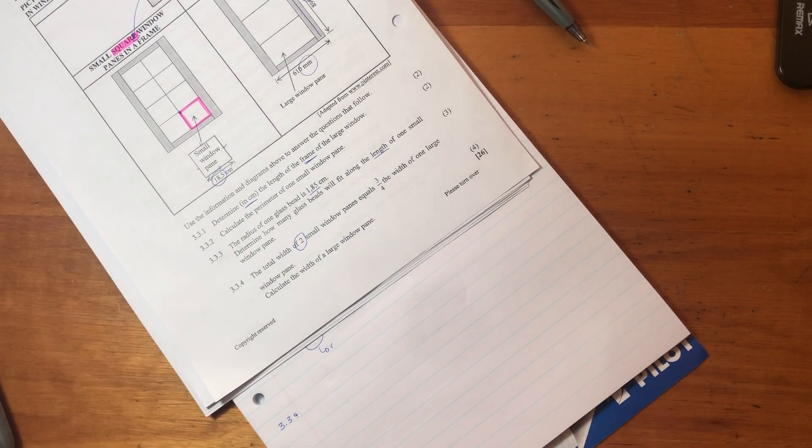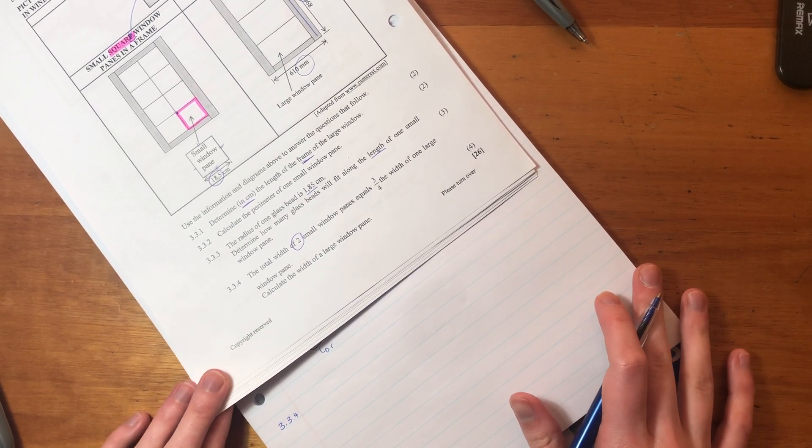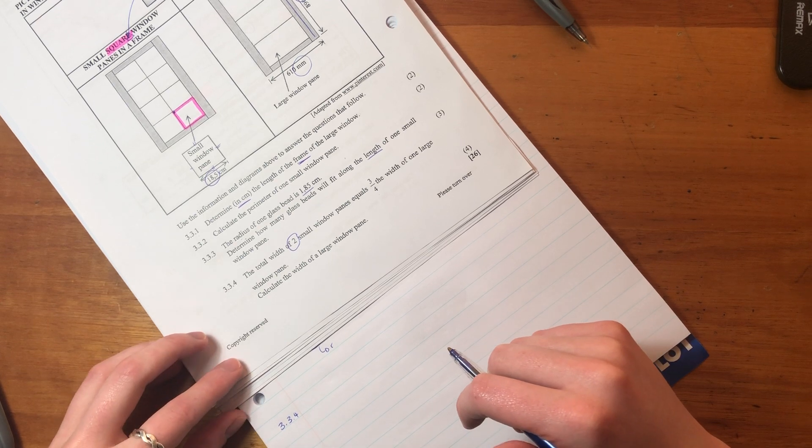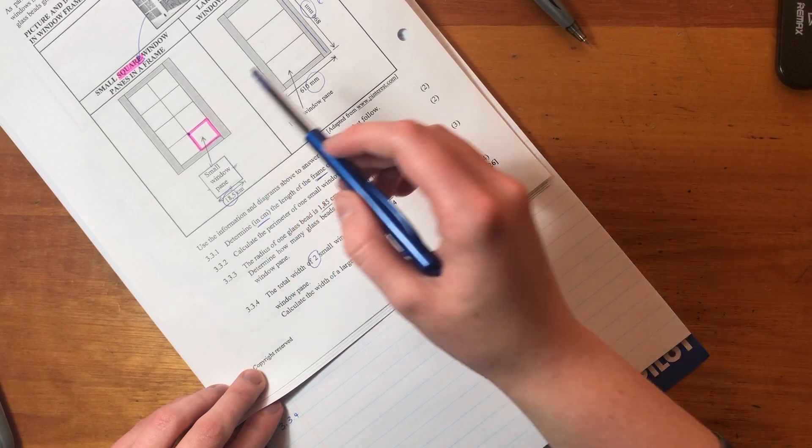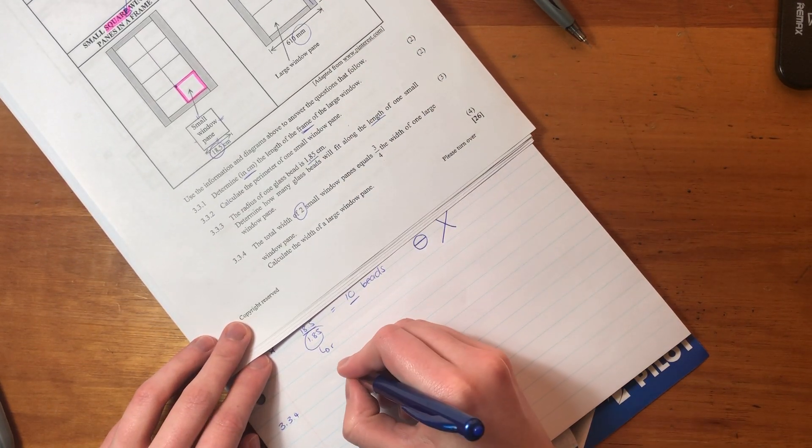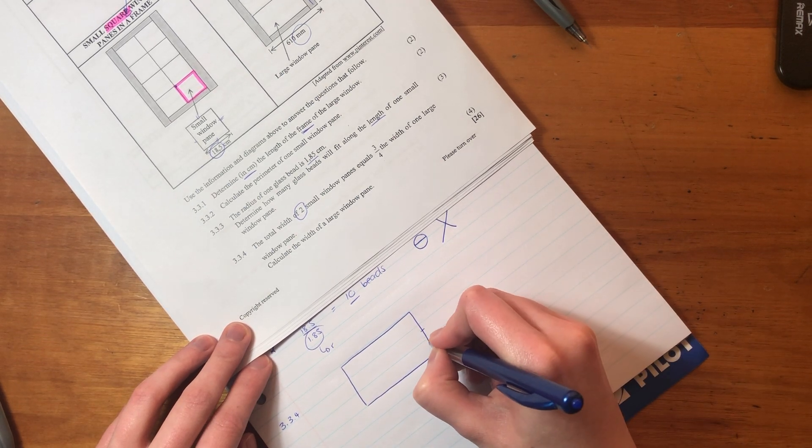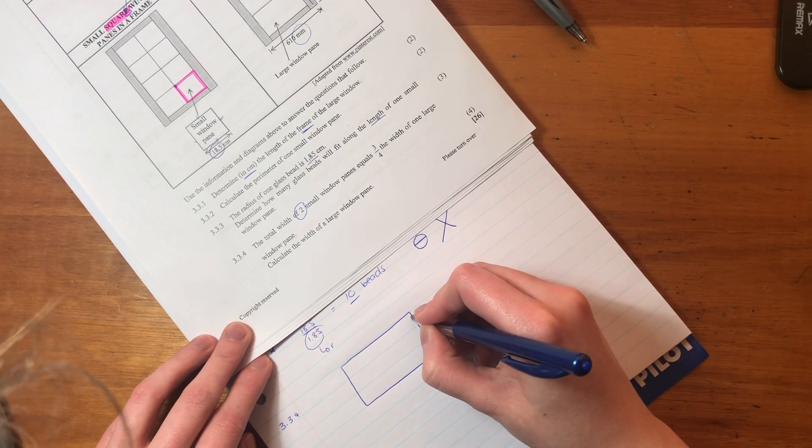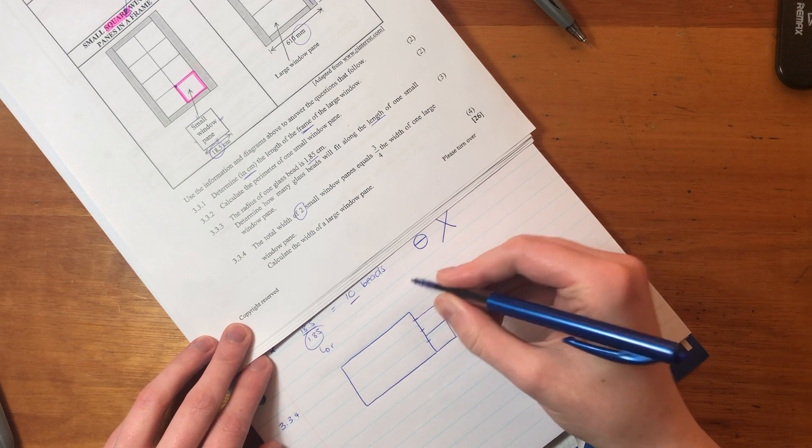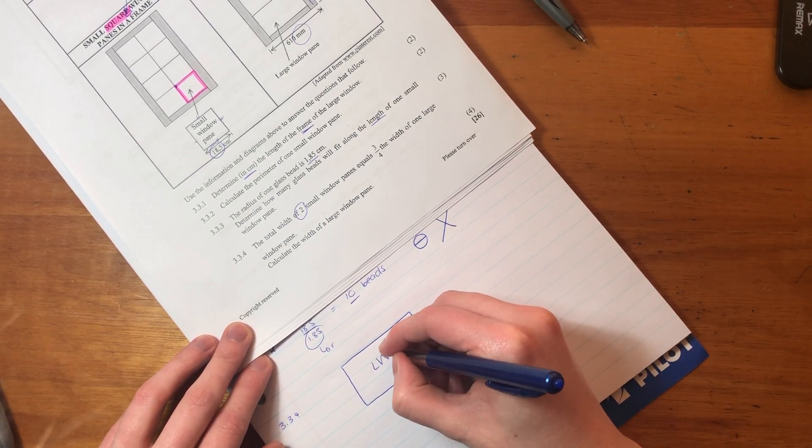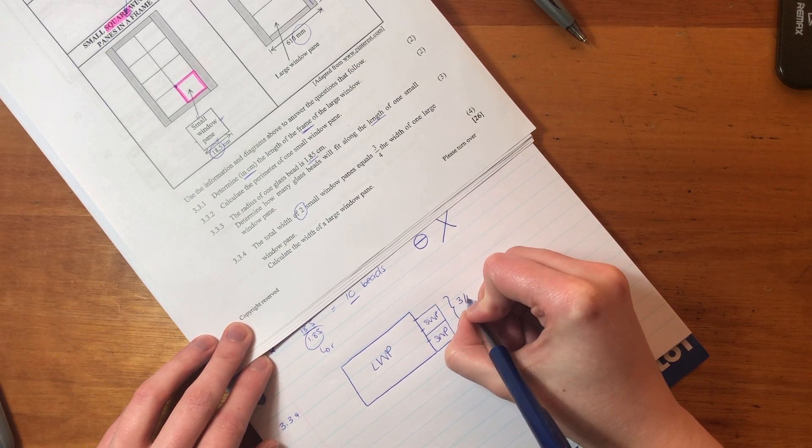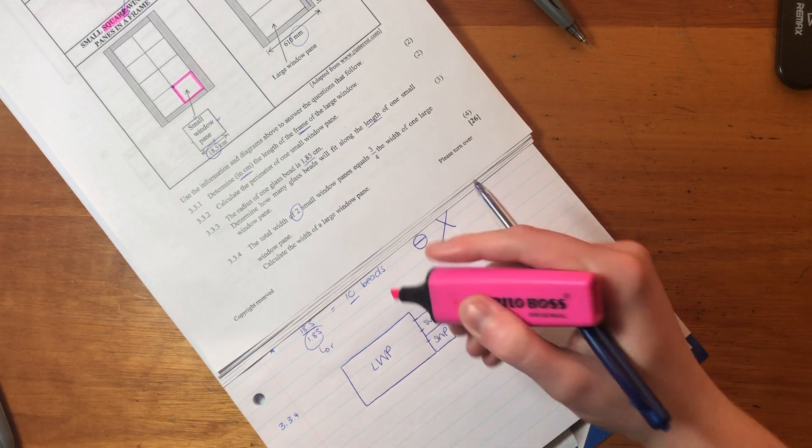So let's move to 3.3.4. And 3.3.4 seems a bit tricky, but it's actually not too bad. It's all about ratios. Remember ratios are just saying, when I get something, when I get one of something, you get a certain amount of something else. That's literally what a ratio is. So here it says the total width of two small window panes equals three quarters of the width of one large window pane. So let's just quickly draw that because it's not always that easy to understand what is going on. So I've basically split this into four - one, two, three, four. And I'm saying three quarters of this is two small window panes. So this is a large window pane and this is a small window pane. Now these two small window panes make up three quarters of the length of this larger window pane.